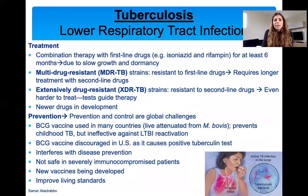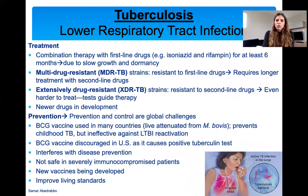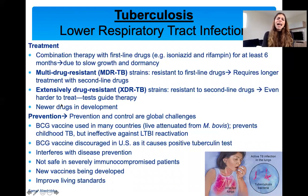Treatment: if someone has TB, they usually get combination therapy with different antibiotics for at least six months, because the bacteria grow so slowly. We now have a lot of spread of multi-drug resistant strains resistant to first-line antibiotic drugs, and even worse, extensively drug-resistant Mycobacterium tuberculosis resistant to all second-line drugs. These are very hard to treat. Newer drugs are in development, but progress is very slow.